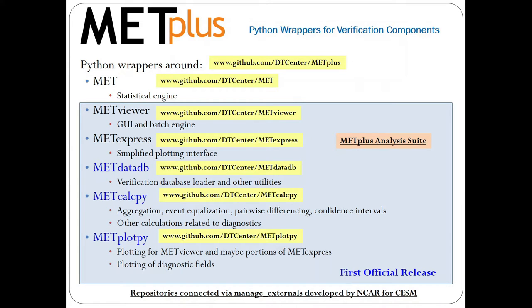Here's a list of the repositories for METPLUS. They all start with github.com/DTCenter, and then each one of the components. We have the Python wrappers in the METPLUS repository, the core statistical engine is in the MET repository, and then there are five different repositories that make up the METPLUS analysis suite. METViewer and METExpress are the two user interfaces, and then Datadb, CalcPy, and PlotPy support those two interfaces.